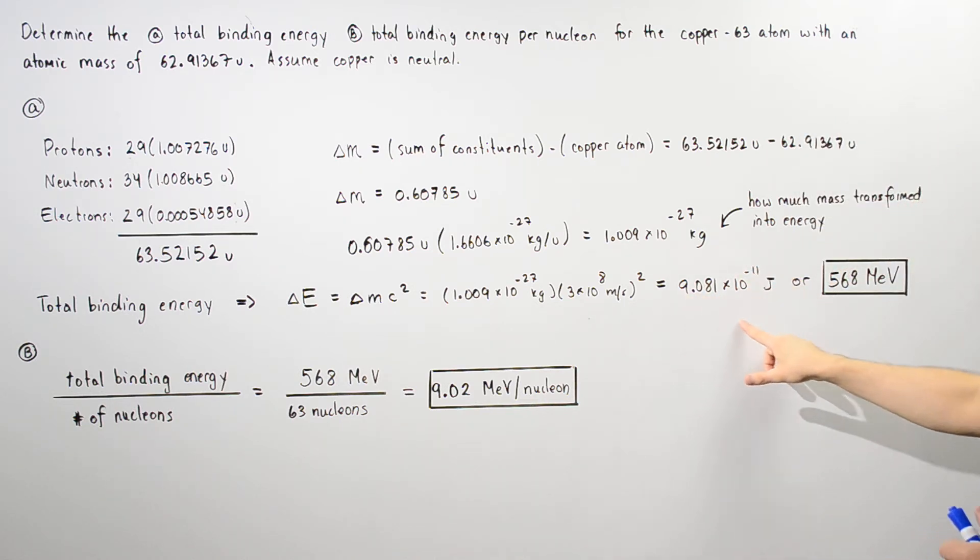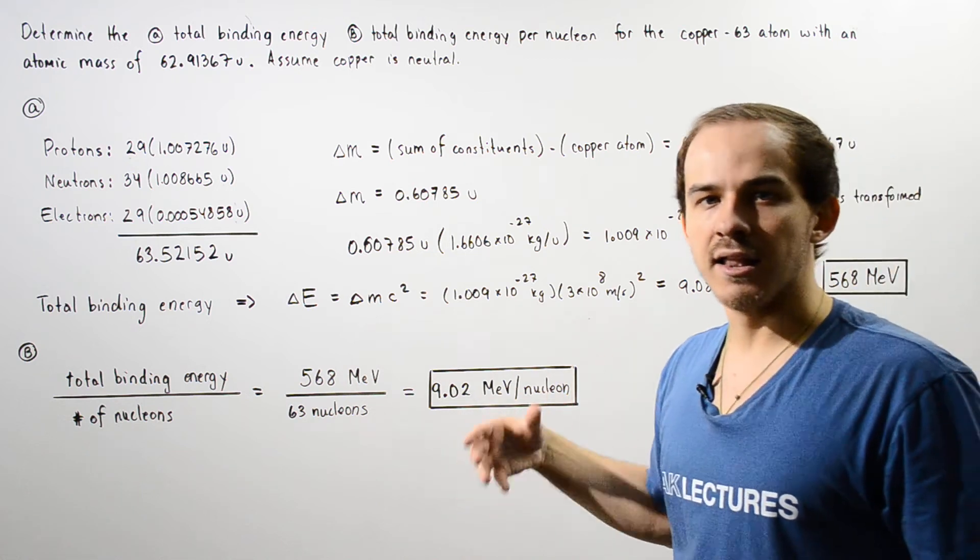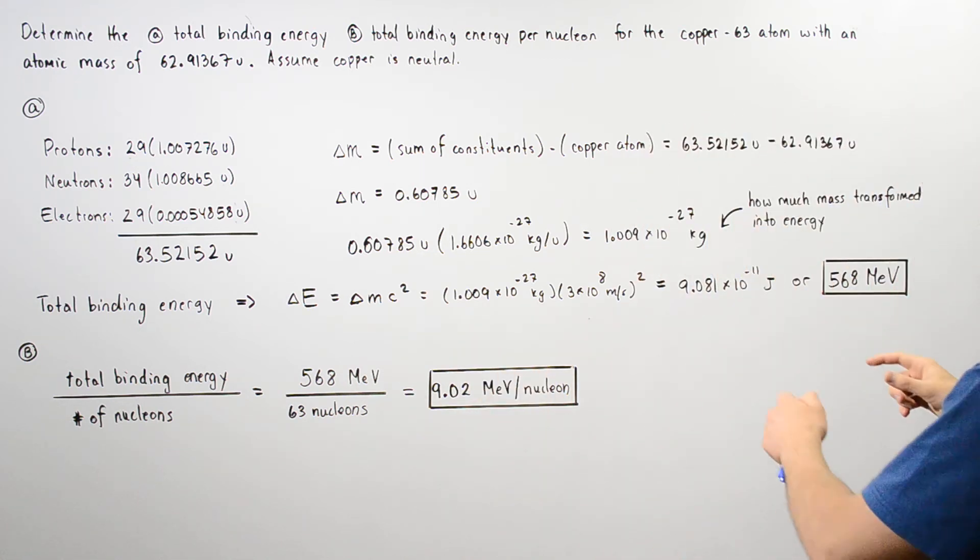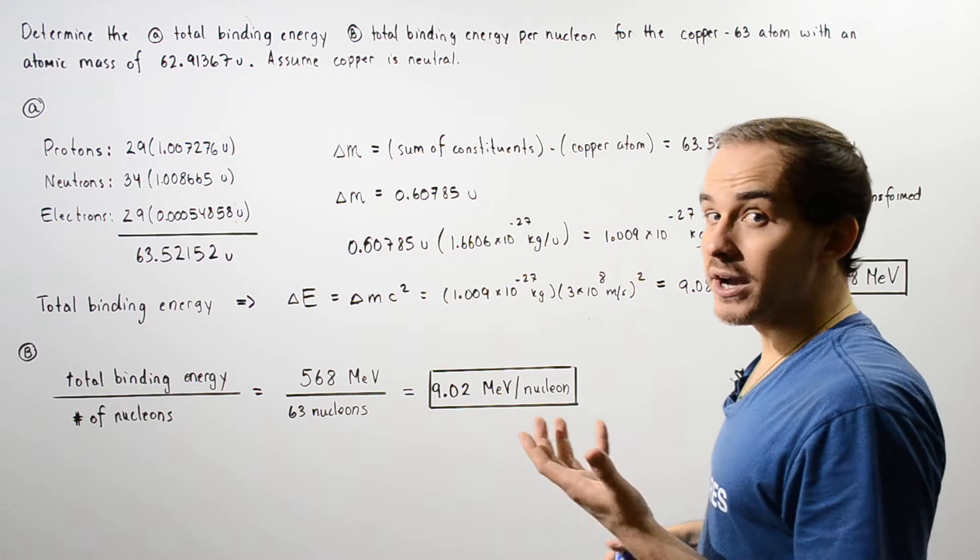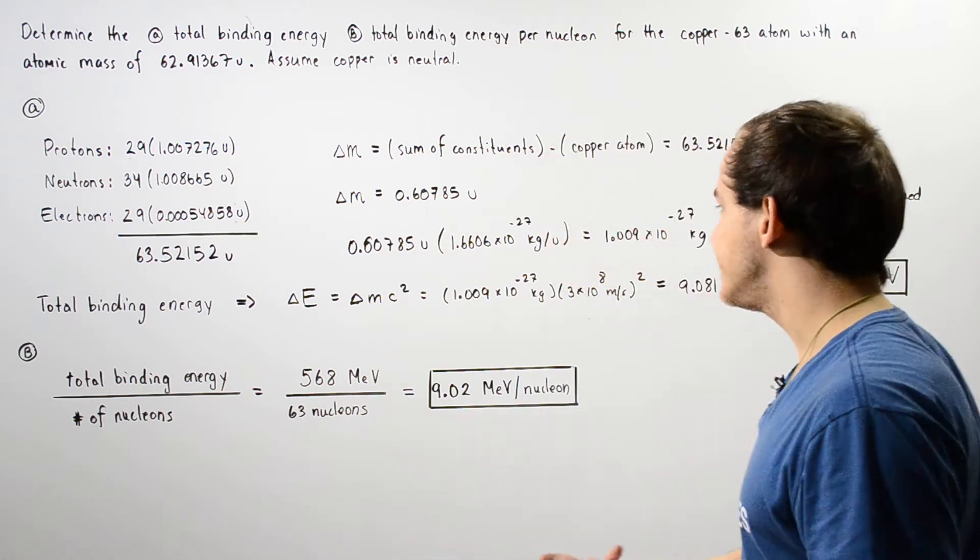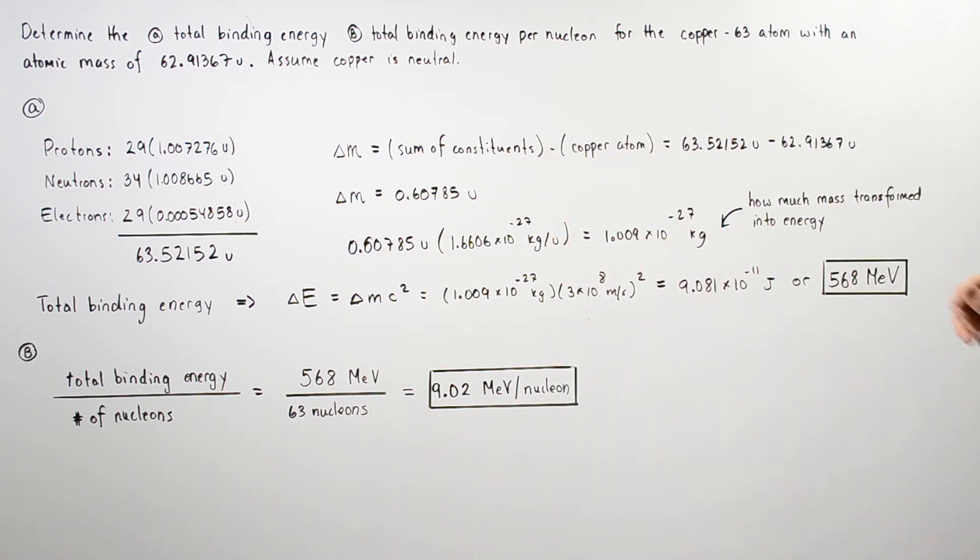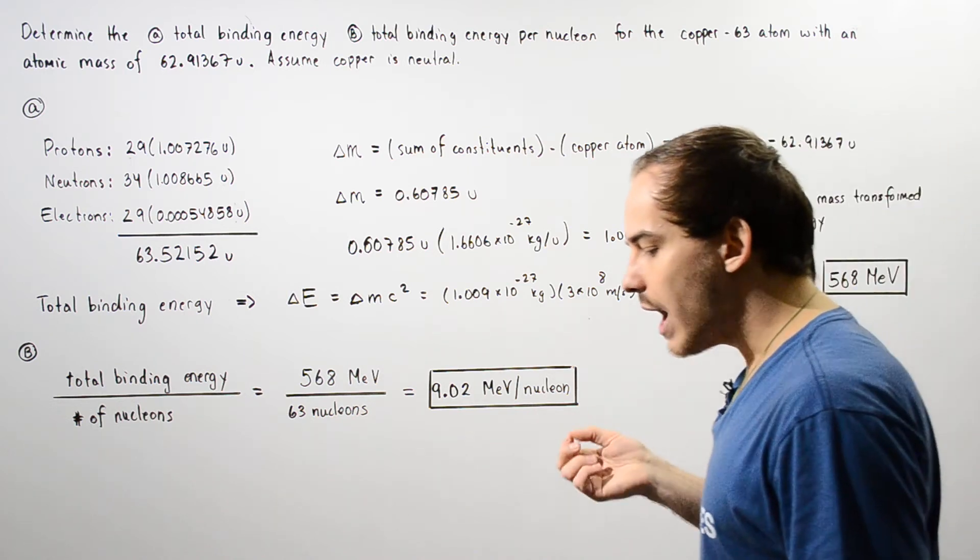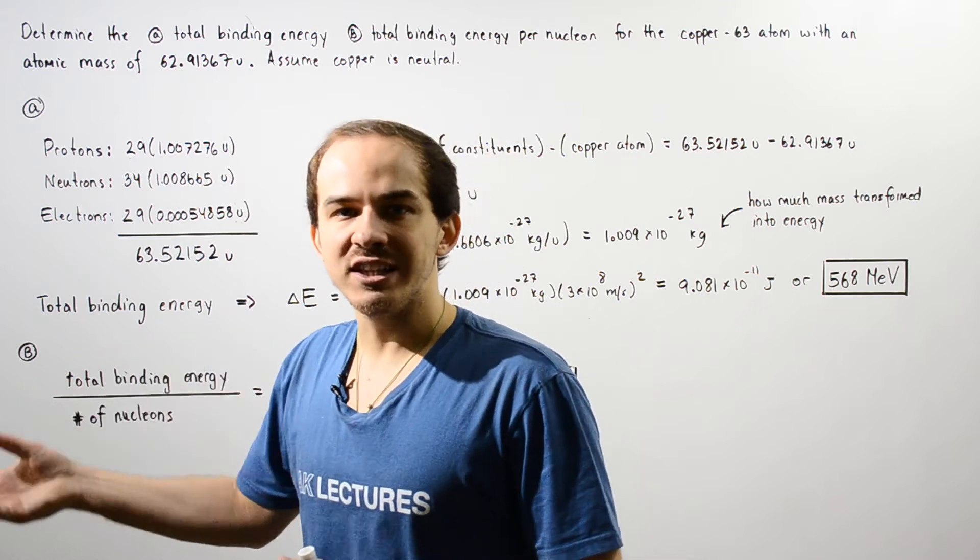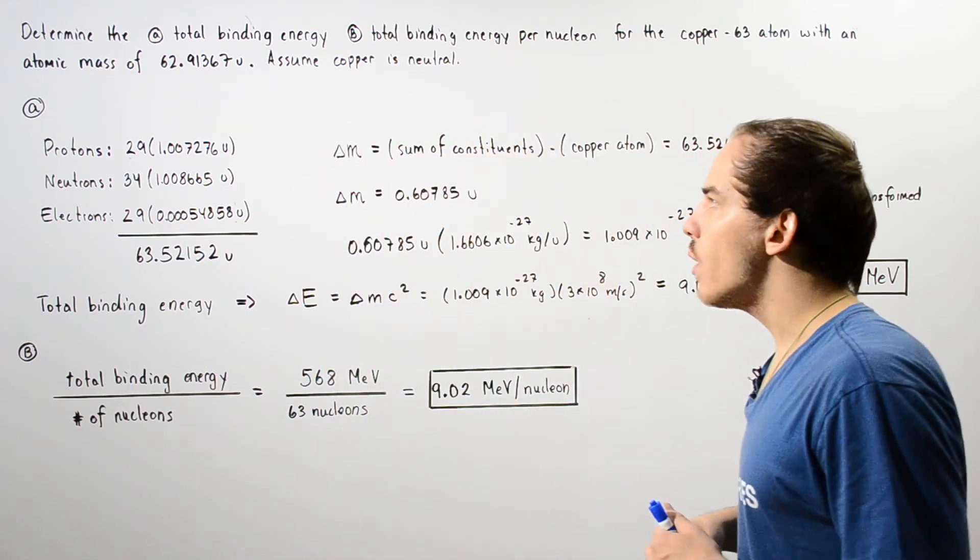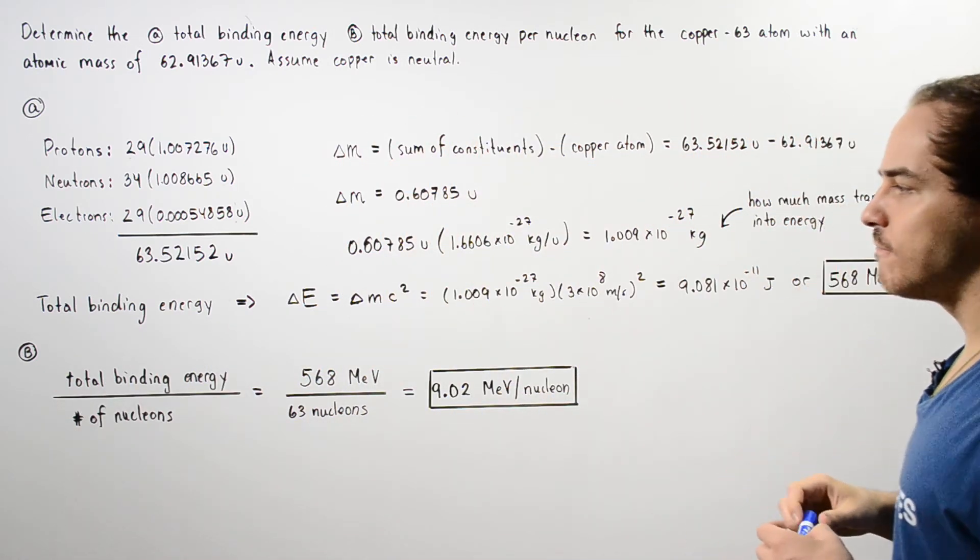Usually we have to express this in mega electron volts. So we divide this by 1.6 times 10 to the negative 19 and we get 568 mega electron volts is the quantity of energy that is released into the environment when our copper atom forms.